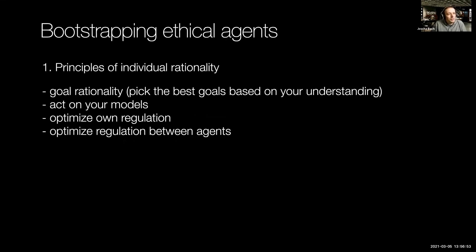So, how can we bootstrap ethical agents? There are some principles for individual rationality that we can discover. For instance, goal rationality, which means you should always pick the best goals based on your current understanding. And then you should act on these models — you need to have skin in the game. You should not just make models; these models need to be directly related to your actions. And you need to update your behavior based on the outcome of your actions, so you can indeed be rational instead of just creating stories for yourself.